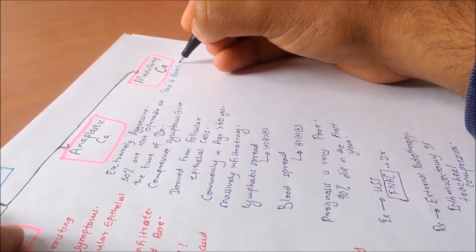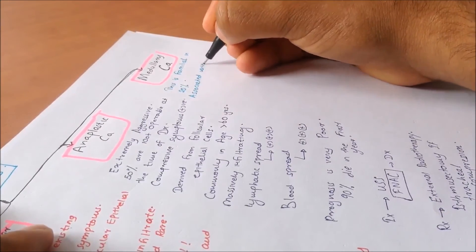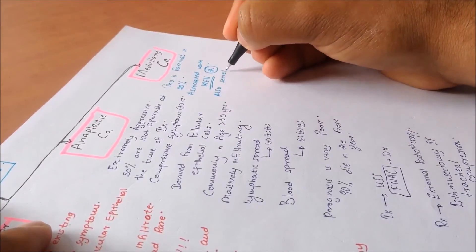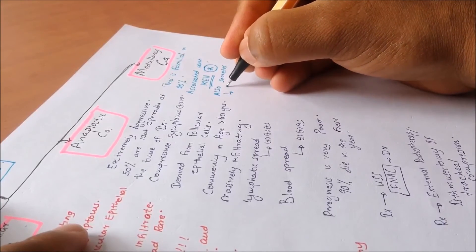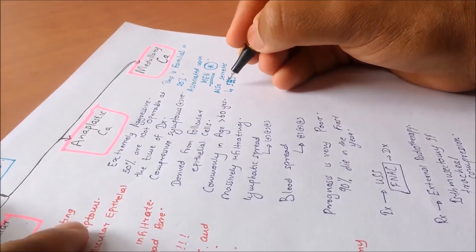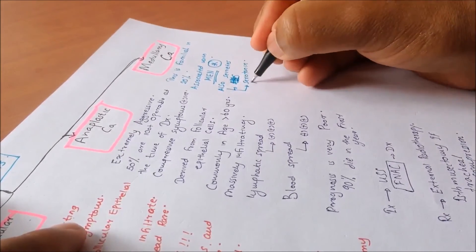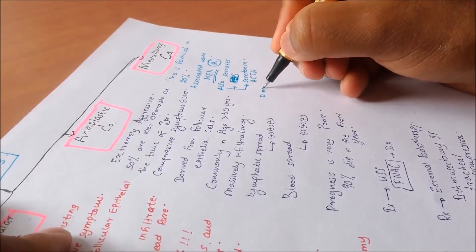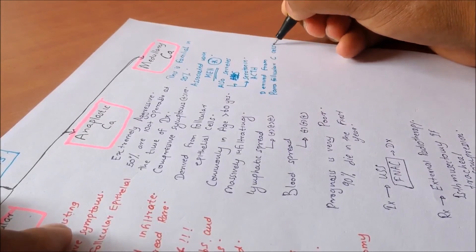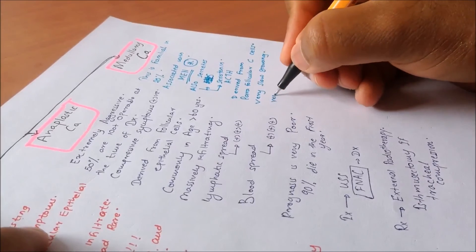Medullary carcinomas are 80% sporadic and 20% familial, with a high association with multiple endocrine neoplasia (MEN) syndrome. This carcinoma secretes serotonin, prostaglandins, ACTH, and vasoactive intestinal polypeptide. Classically, medullary carcinomas can present with diarrhea due to VIP secretion. The origin is the parafollicular C cells. This is the least common cancer — just 5% of all thyroid carcinomas.